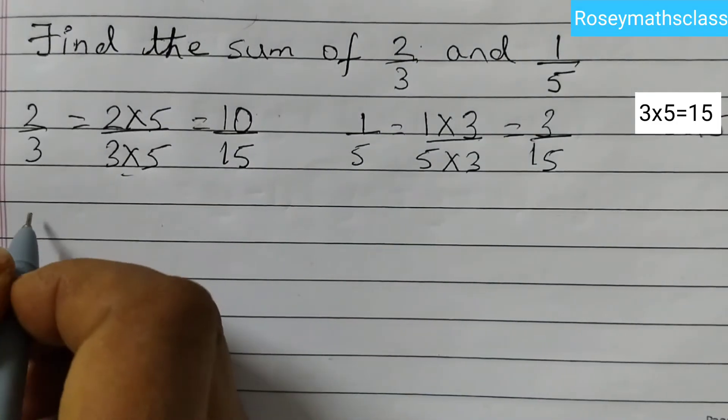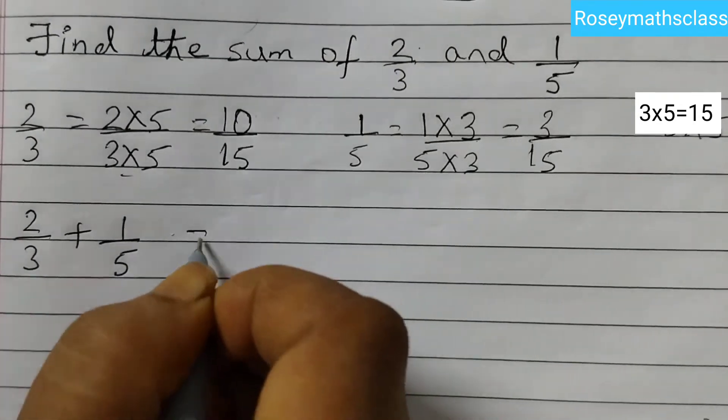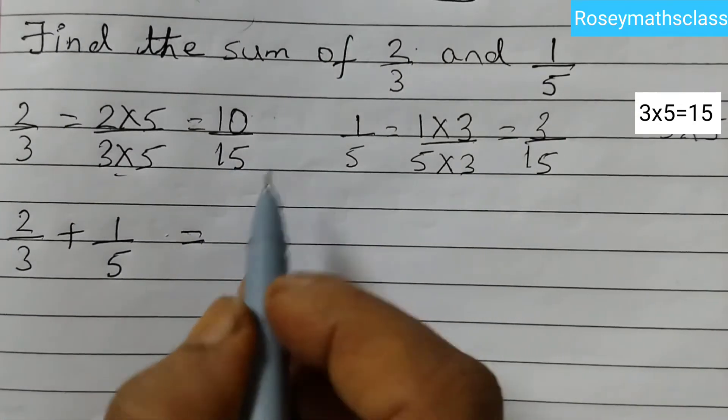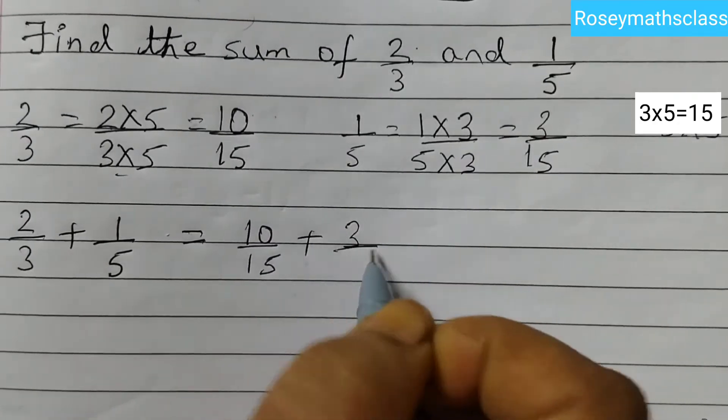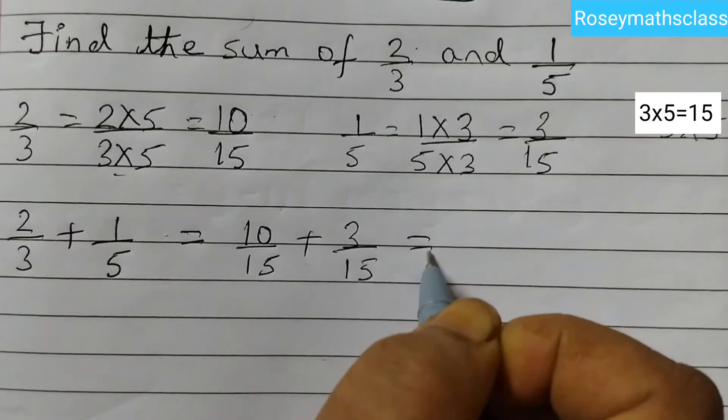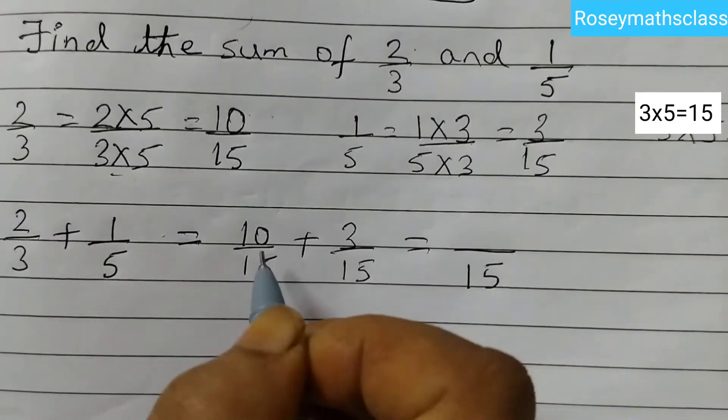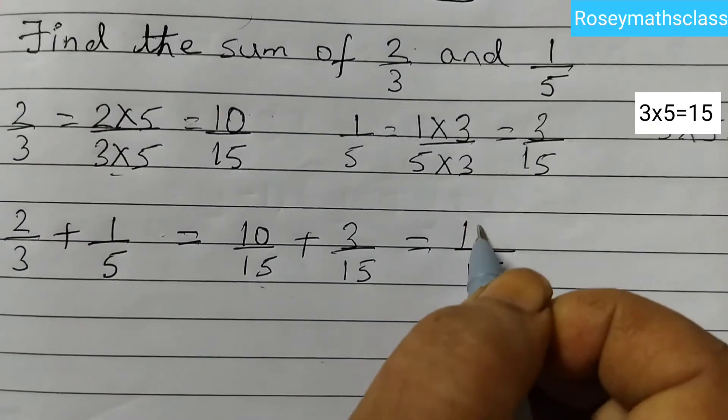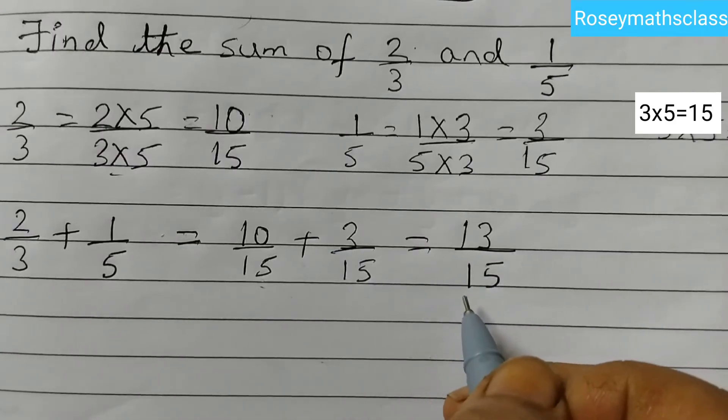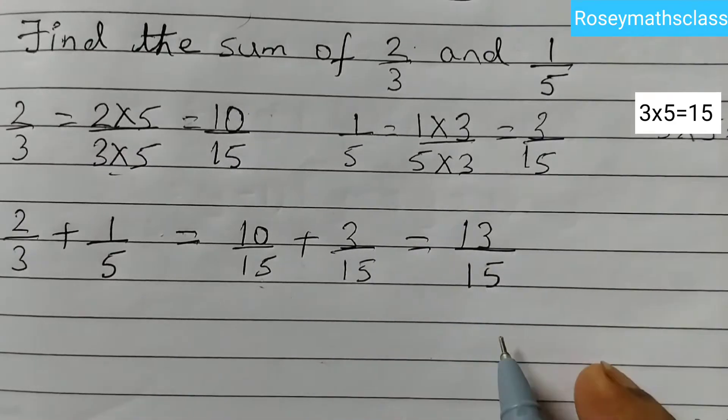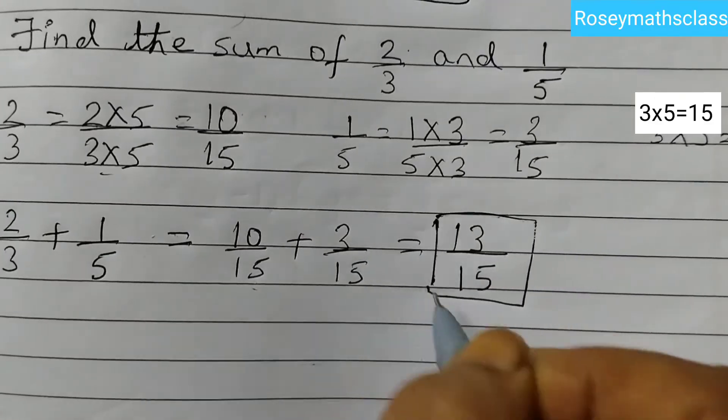So we will write 2 by 3 plus 1 by 5 which is equal to 10 by 15 plus 3 by 15 equals to, keep the denominator as it is, 15. Add the numerators, 10 plus 3 is 13. So the answer is 13 by 15 and this is already in the lowest form so we don't need to simplify it. So this is the answer, 13 by 15.